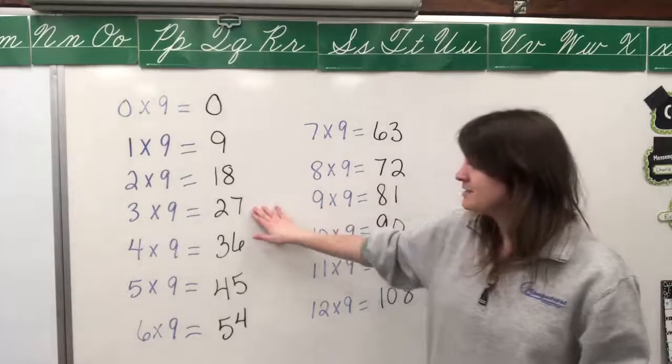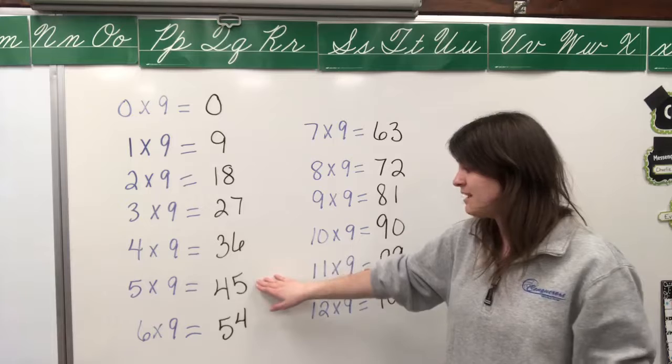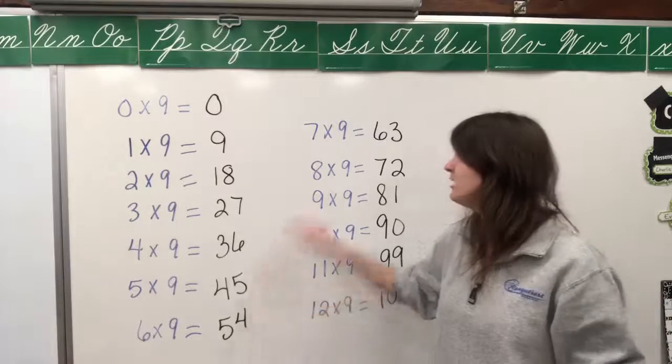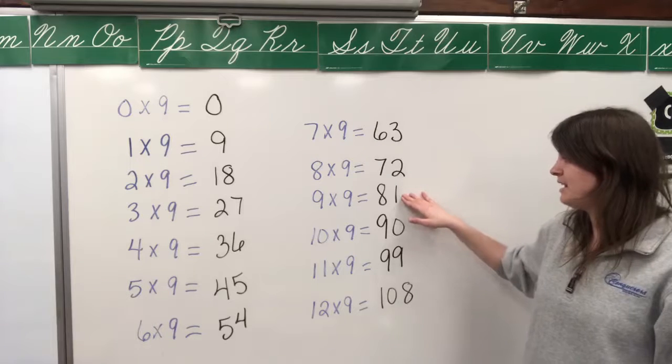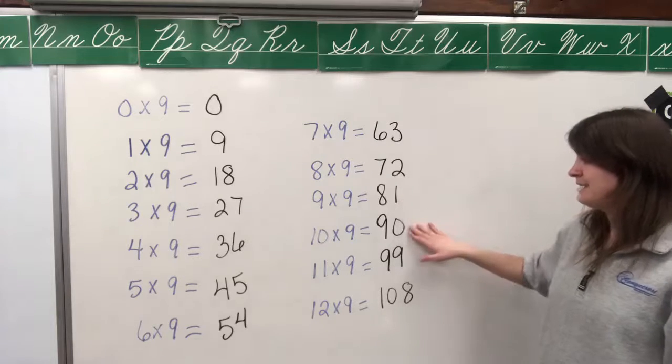Twenty-seven, thirty-six, forty-five, fifty-four, sixty-three, seventy-two, eighty-one, ninety. Nine times ten, ninety-nine. Nine times eleven, a hundred and eight. Nine times twelve.